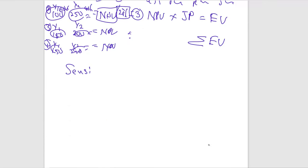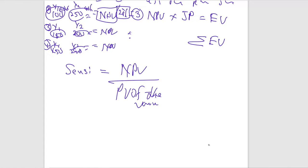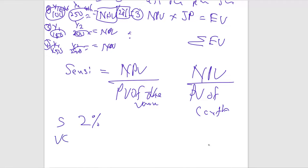Sensitivity analysis: sensitivity = NPV ÷ present value of the variable. For sales volume sensitivity: NPV ÷ present value of contribution. For sales value sensitivity: NPV ÷ present value of sales. A lower sensitivity percentage means higher sensitivity — for example, if sales sensitivity is 2% and variable cost sensitivity is 10%, sales is the more sensitive variable, meaning only a 2% change in sales could bring NPV to zero.